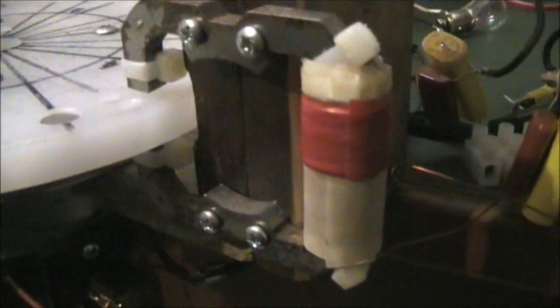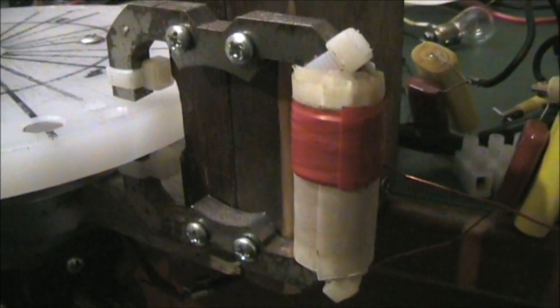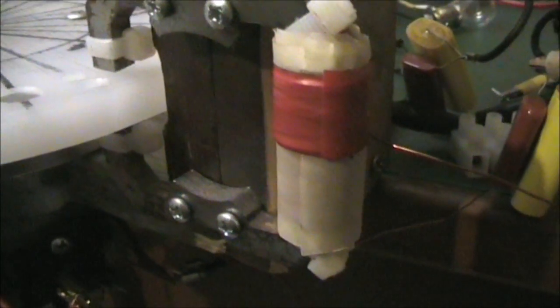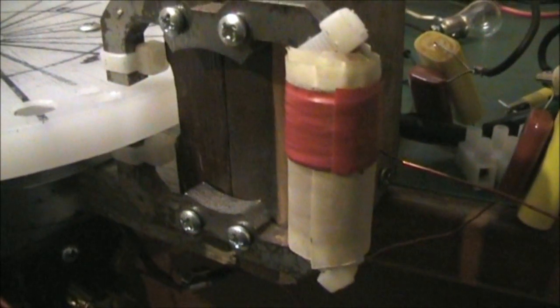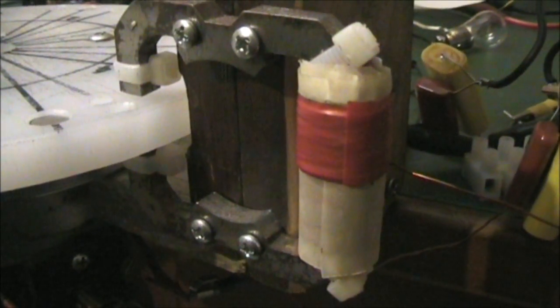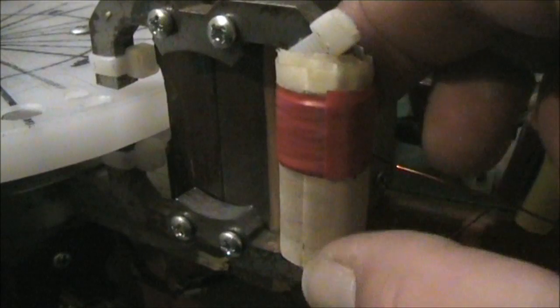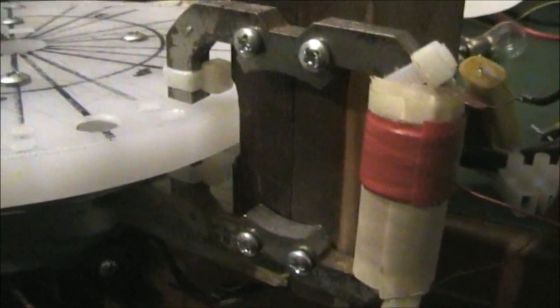The coil there is about 270 turns, 0.7mm wire approximately. There's five layers on there, about 50 turns a layer or so.